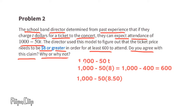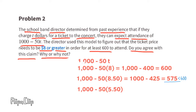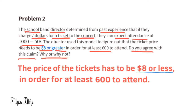Now let's substitute t with something greater than eight dollars, like $8.50: 1000 minus 50 times 8.50 equals 1000 minus 425, which is 575. Since 575 is less than 600, I don't agree with the band director. Testing with $5.50: 1000 minus 50 times 5.50 equals 1000 minus 275, which is 725. Since 725 is greater than 600, the ticket price has to be eight dollars or less for at least 600 people to attend.